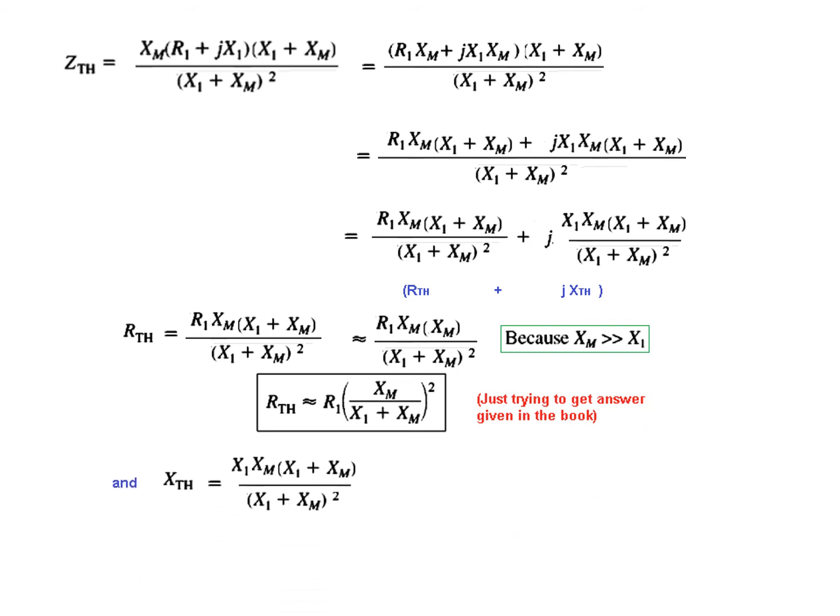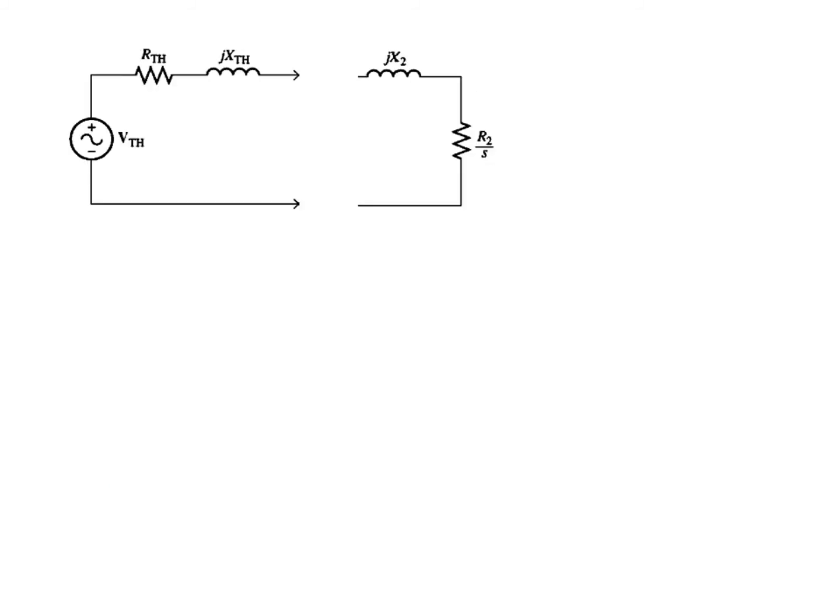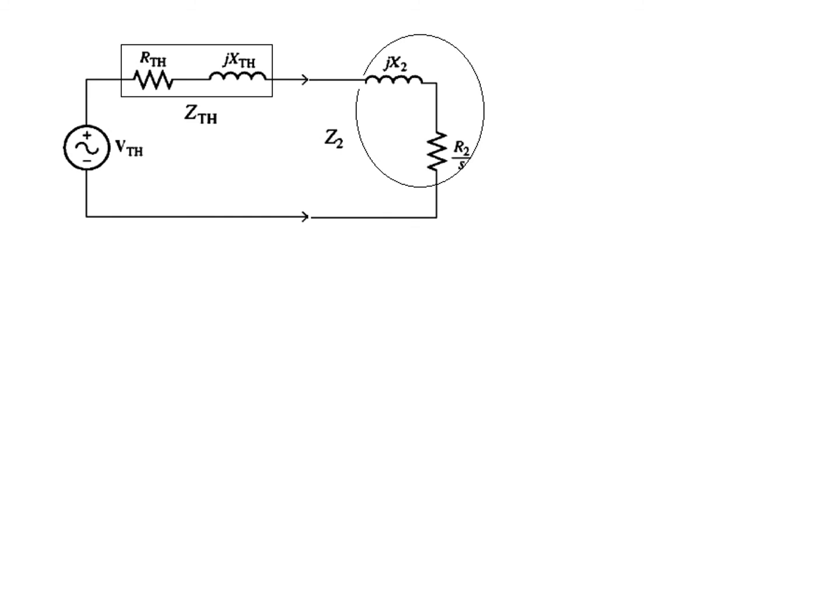Next we have X_Thevenin. This is X_Thevenin. And here also we will simplify. We are just taking or replacing X_1 plus X_M is equal to X_M in both numerator and denominator. Now X_M, X_M, X_M squared will cancel X_M squared. So X_Thevenin will become equal to X_1. So these are the approximate values. And now our Thevenin circuit just like this. We will connect whatever we have detached. So this is Z_Thevenin and this we are calling Z_2.